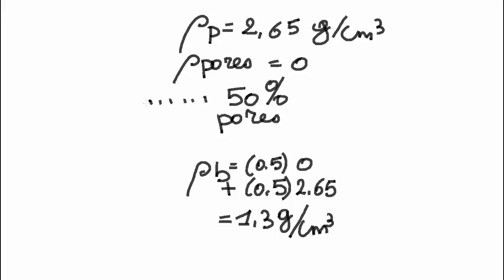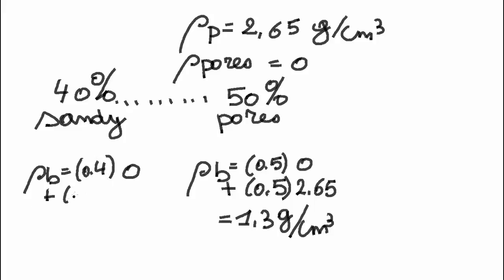If the soil is more sandy, the porosity is lower and might be up to 40%. These are the sandy soils. The bulk density is 40% of pores with density 0, plus 60% of solid material with density 2.65. It gives me a bulk density of 1.6 g per cm³.